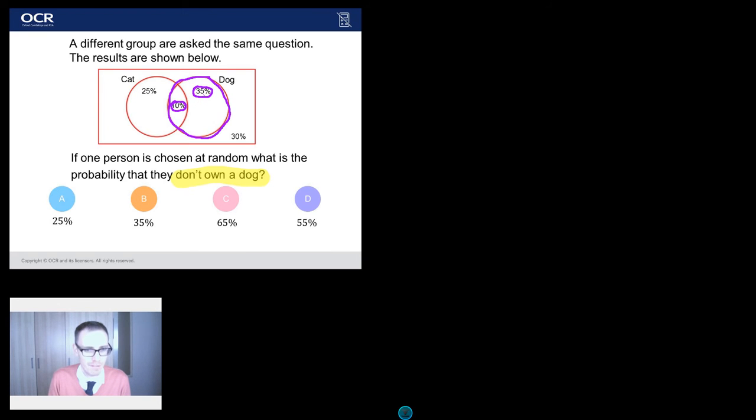What's the difference between those two things? Well, the 35%, they just own a dog. They don't own anything else. But these 10%, they're in the dog circle and they're in the cat circle. So they own both a dog and a cat. But for the purposes of this question, we're only interested in dogs. So what about the people who don't own a dog?